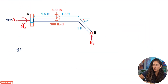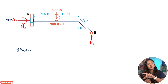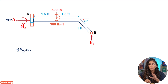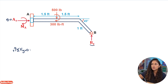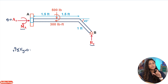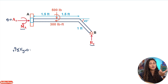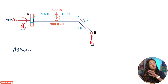Let's set up our equilibrium equations, starting with the summation of forces in Y equals zero. We start here because we need to find By before we can set up the moment equation. Our sign convention is that up is positive. Note that we're assuming directions for By and the moment at A — if we get a negative answer, it means our assumption was wrong.